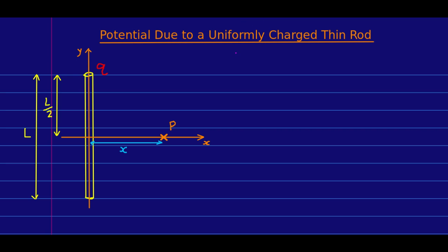So we're going to start, as we did with fields, with the simplest continuous charge distribution we can, a uniformly charged thin rod. And the process is going to be very similar to what we did for a field, and so I'm going to go through it a little faster.